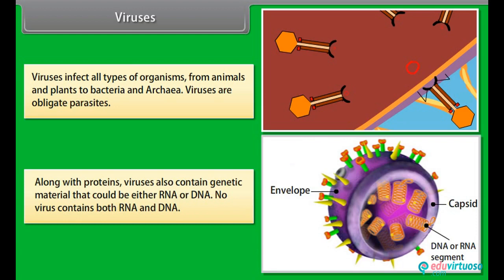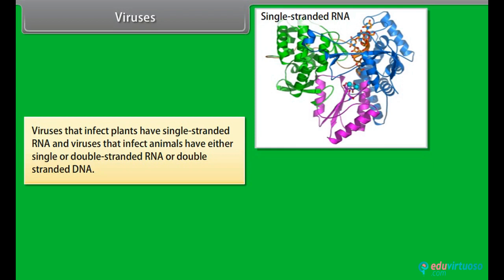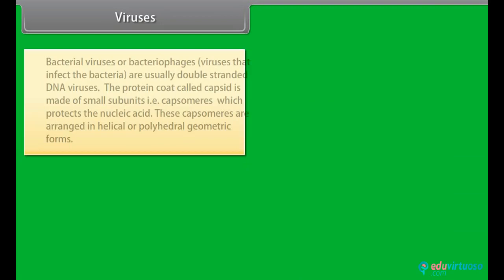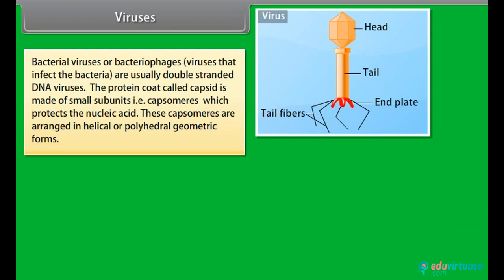Along with proteins, viruses also contain genetic material that could be either RNA or DNA. No virus contains both RNA and DNA. Viruses that infect plants have single-stranded RNA, and viruses that infect animals have either single or double-stranded RNA or double-stranded DNA. Bacterial viruses, or bacteriophages, are usually double-stranded DNA viruses. The protein coat called capsid is made of small subunits called capsomeres, which protect the nucleic acid. These capsomeres are arranged in helical or polyhedral geometric forms.